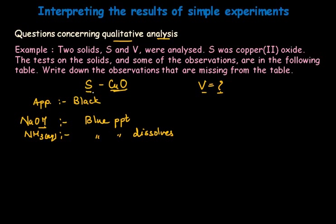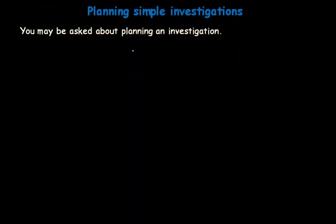For the unknown solid V, the observations are given in the table and from those you need to identify the salt — determining both the cation such as copper and the anion present in the salt.